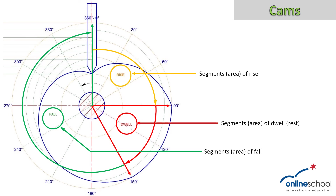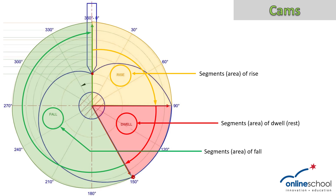Here I am indicating what it will look like when we have the rise, the dwell, and the fall. In this particular example, our follower starts at the minimum displacement at zero degrees — that is where the movement starts. It gradually rises for the first 90 degrees, which I have colored in yellow. Then it is going to dwell for the next 60 degrees, from 90 degrees to 150 degrees. Once it reaches 150 degrees, it starts its descent — it is going to fall from 150 degrees all the way back to the starting point through 180, 210, all the way to 360 degrees.